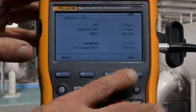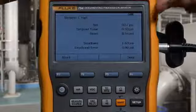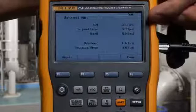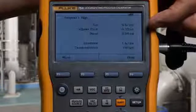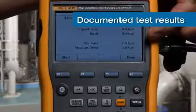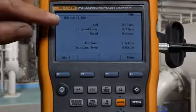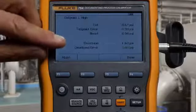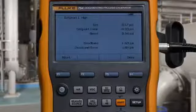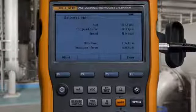Press done, and you see your documented test, the set point value, the error from ideal set point, the reset point, the size of the dead band, and the dead band error. If either the set point error or the dead band error were greater than test tolerance, they would be flagged in a reverse video indication.